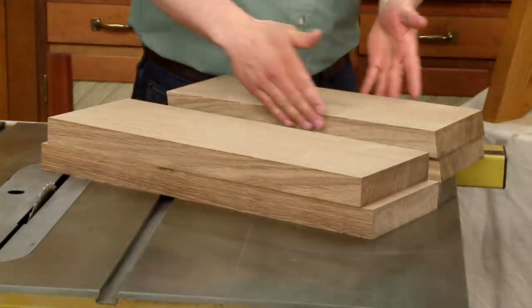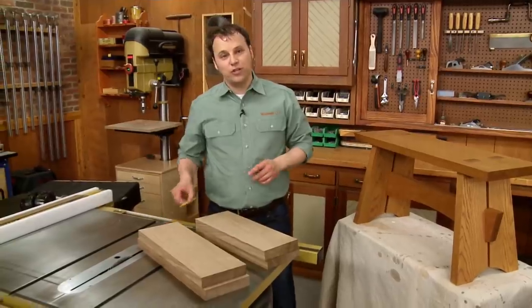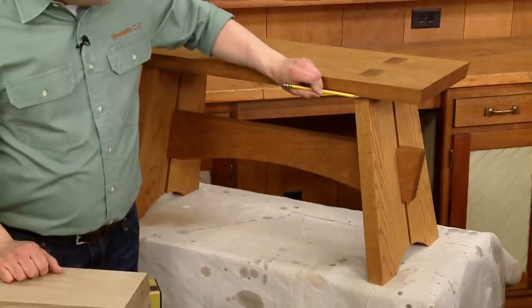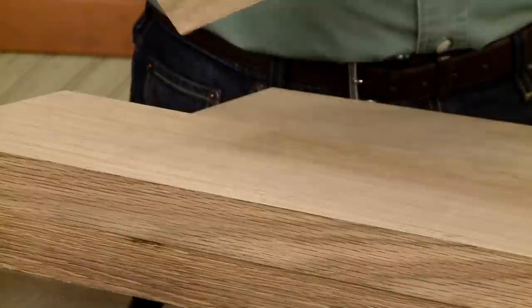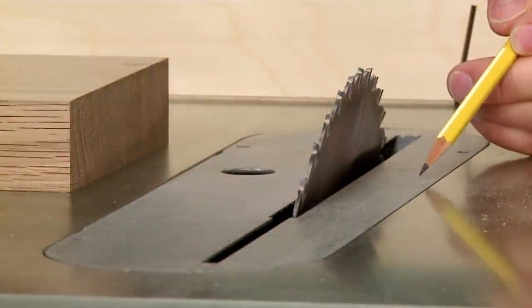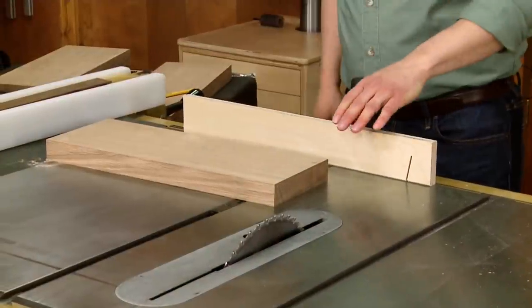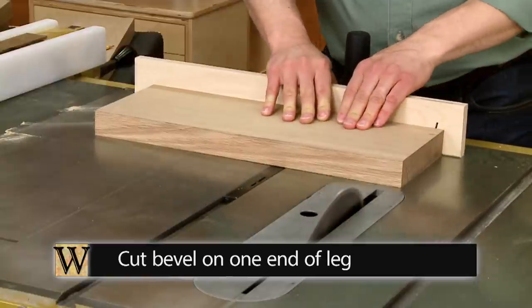You can see I have my leg blanks here already cut to their final width. Now what I want to do is cut the bevel at the top and the bottom edges, and this is going to allow the legs to sit at their correct angle. I tilted the saw blade ten degrees. Then using an auxiliary fence on the miter gauge, I cut a bevel on one end of each leg.